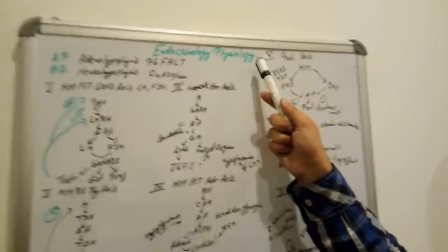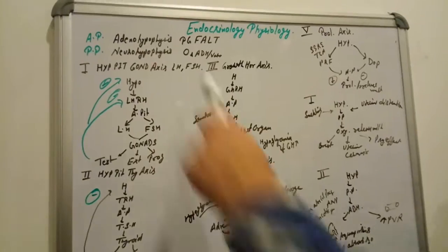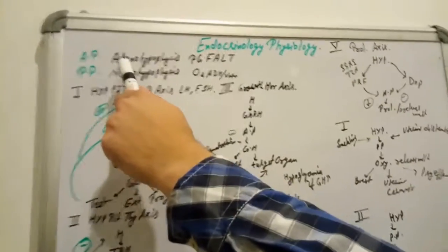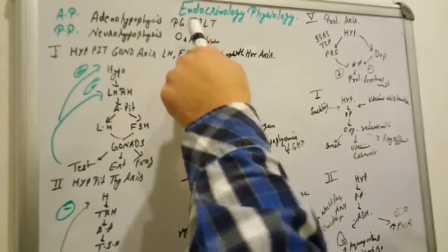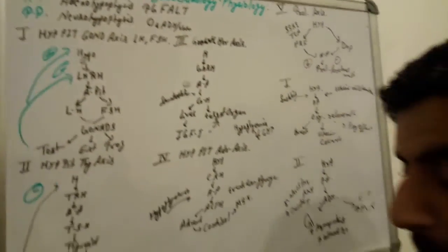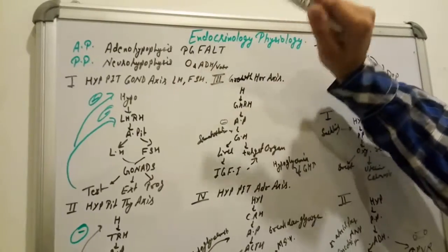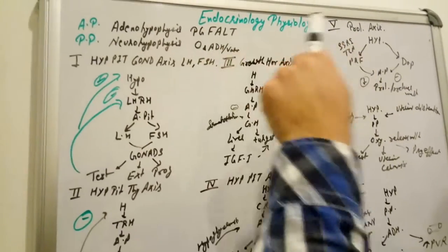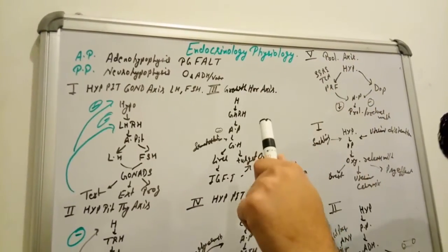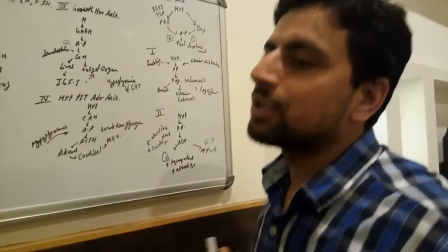Our today's topic is endocrine physiology. As we know, the anterior pituitary — also called adenohypophysis, 'A' for anterior and 'A' for adenohypophysis. To learn the hormones it secretes, please learn this trick: 'PG fault' — postgraduate fault. P represents prolactin, G represents growth hormone, F represents follicle stimulating hormone, A represents adrenocorticotropic hormone, L represents luteinizing hormone, and T represents thyroid stimulating hormone. In examinations they like to ask which hormone is not secreted by anterior pituitary — so remember PG fault.